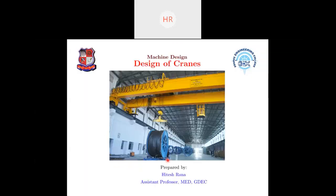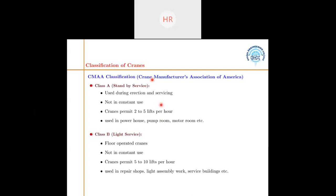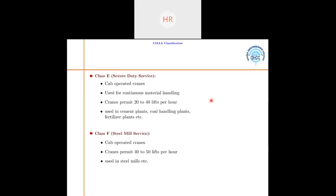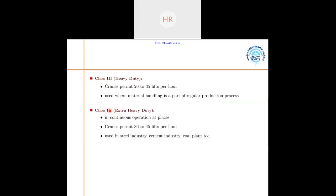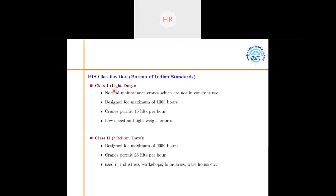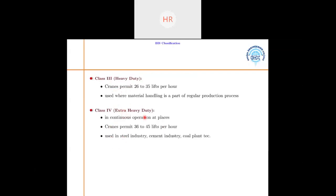This completes the classification given by CMAA, the Crane Manufacturers Association of America. Another classification is given by BIS, the Bureau of Indian Standards. According to BIS, cranes are classified into four classes: light duty, medium duty, heavy duty, and extra heavy duty.